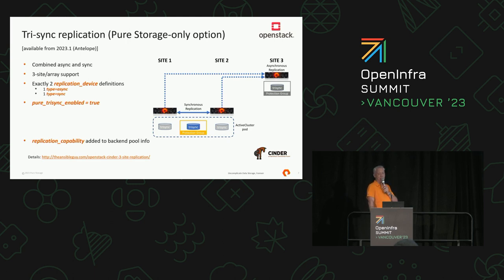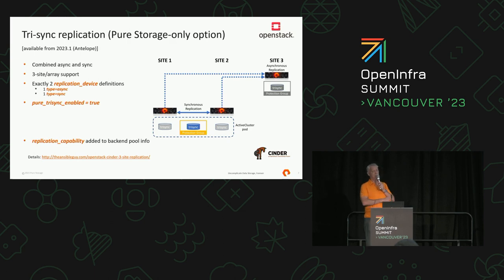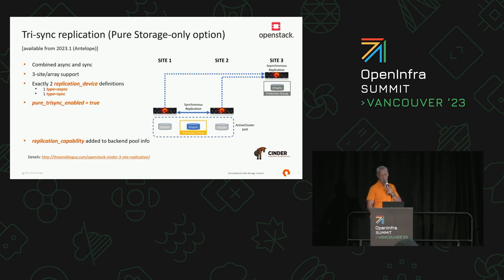To help people understand what's going on, because it's starting to get complicated, we've added a replication capability field into the pool capabilities. So when you do get pool, you can actually see what the replication capability is of the array. There's a lot more detail about this specific configuration — I've got a link at the bottom here to my blog site, so you can go have a look at that.